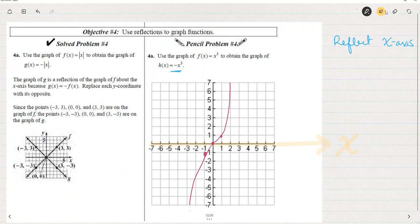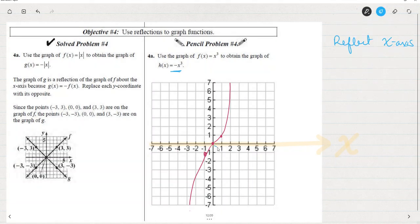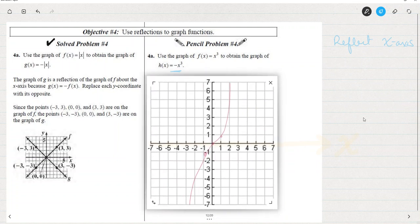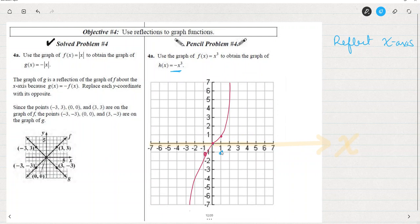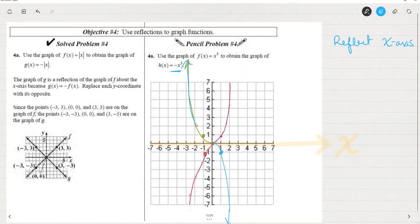And then if I reflect about the x-axis, let's make sure everyone's clear on where the x-axis is. Here's the x-axis, right? So if I reflected there, then everything above the x-axis is going to come down. So this part here in quadrant one comes down to quadrant four, and then this part down here in quadrant three would come up here.